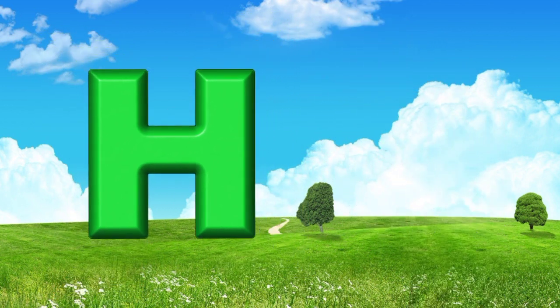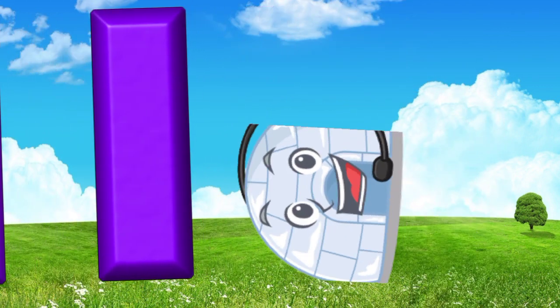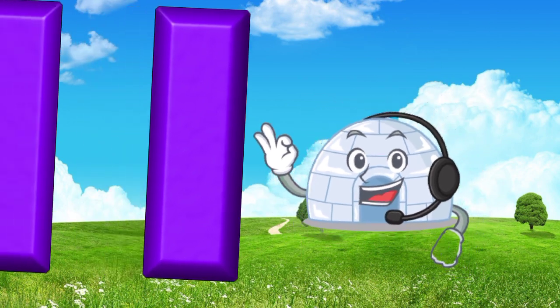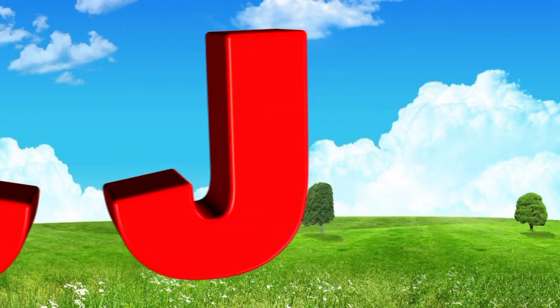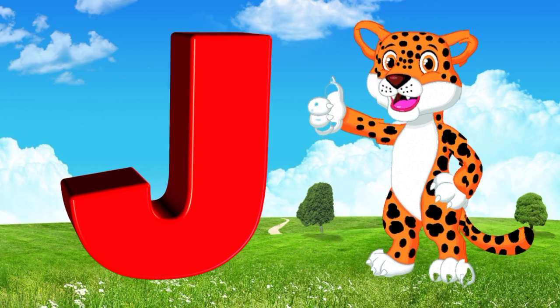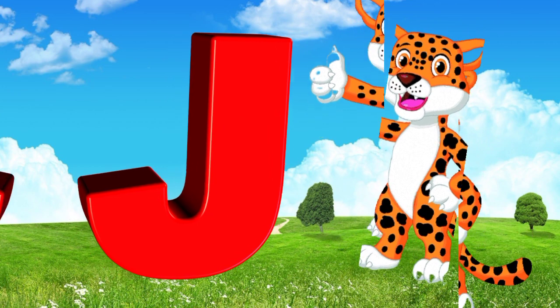I is for igloo, i-i-igloo. J is for jump, j-j-jump.